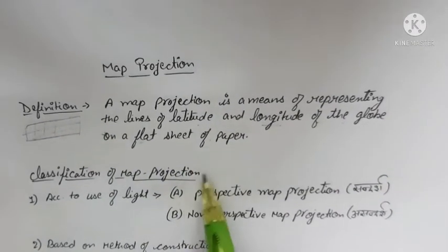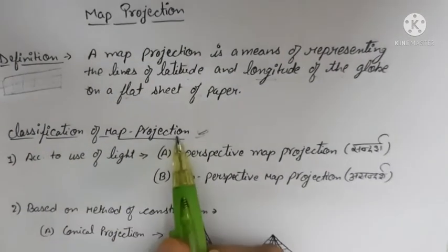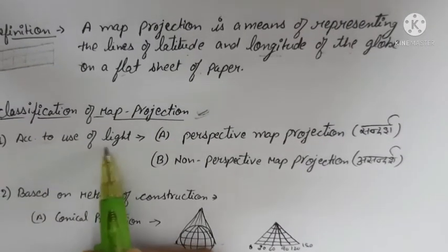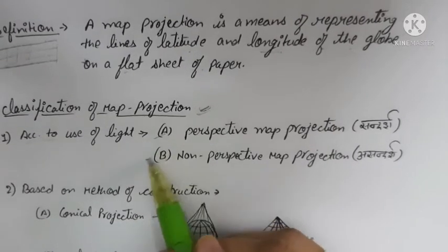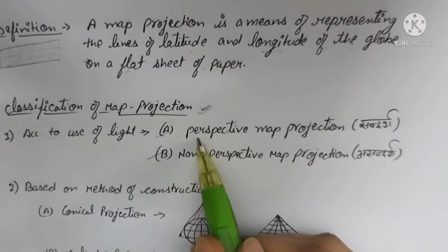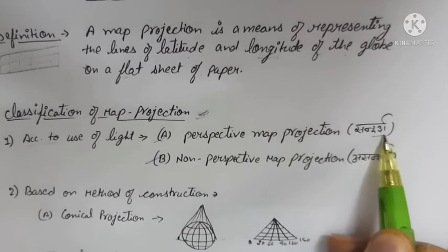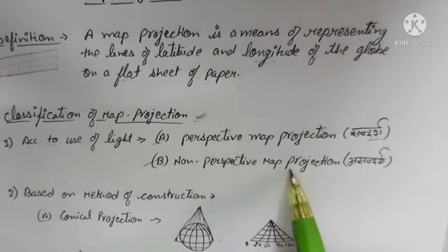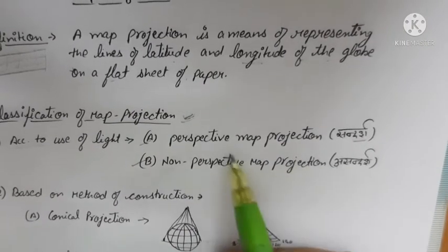Now we are talking about the types of projections — classification of map projection. First, according to use of light, we have divided into two categories. First is perspective map projection, and second is non-perspective map projection.